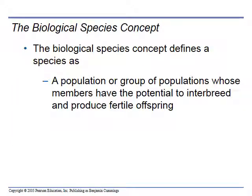The biological species concept says we will consider something a species if it breeds and can produce fertile offspring, so that the offspring can continue to breed and their offspring can continue to breed. For example, a horse and donkey can produce a mule, but that mule cannot breed and produce other mules — they are infertile. So the horse and donkey remain genetically isolated from each other; they are individual species.